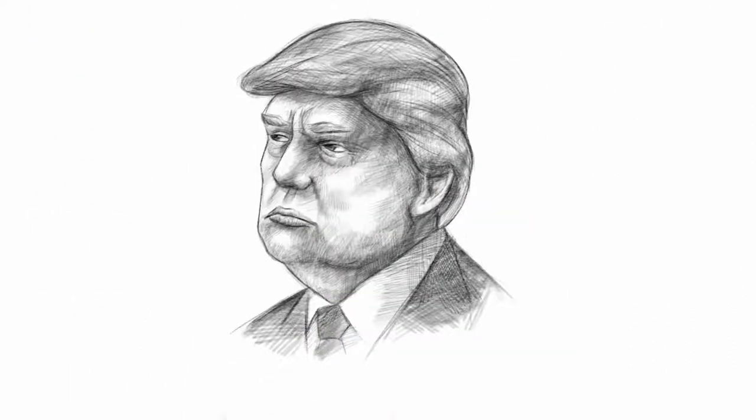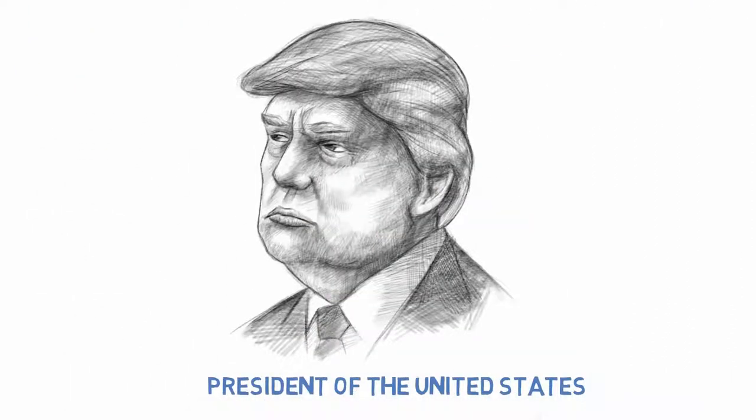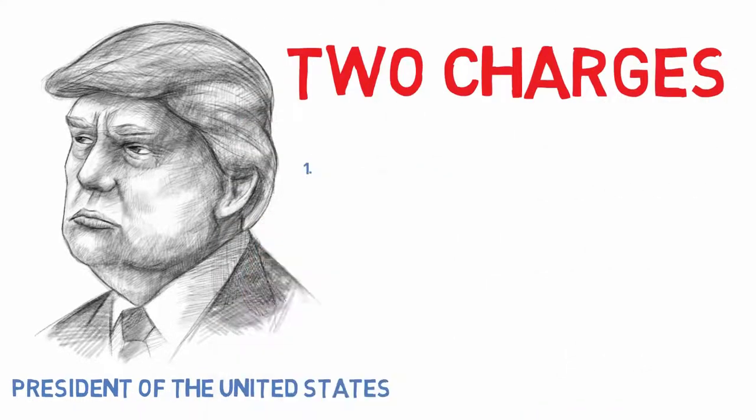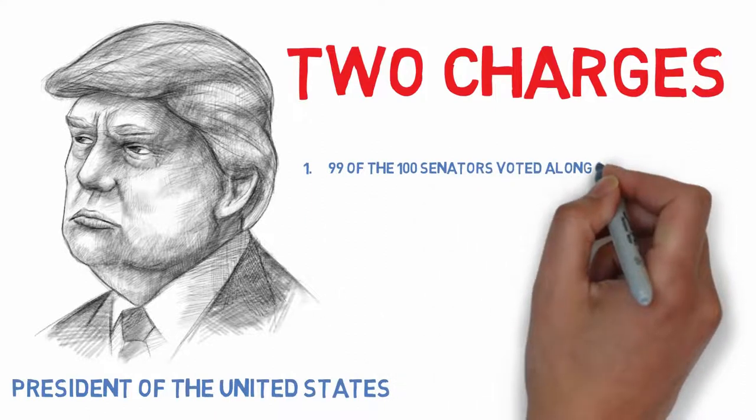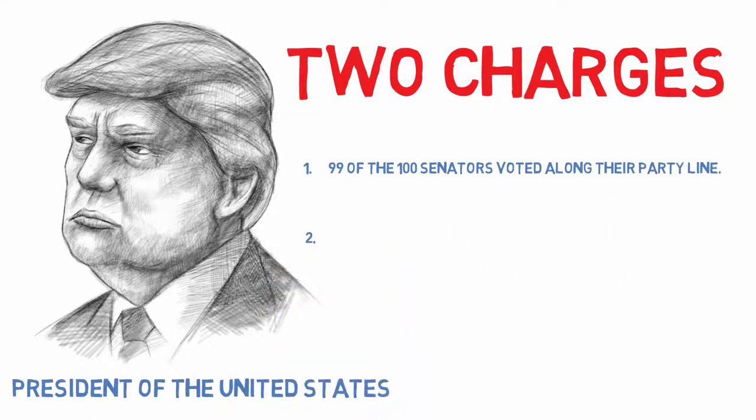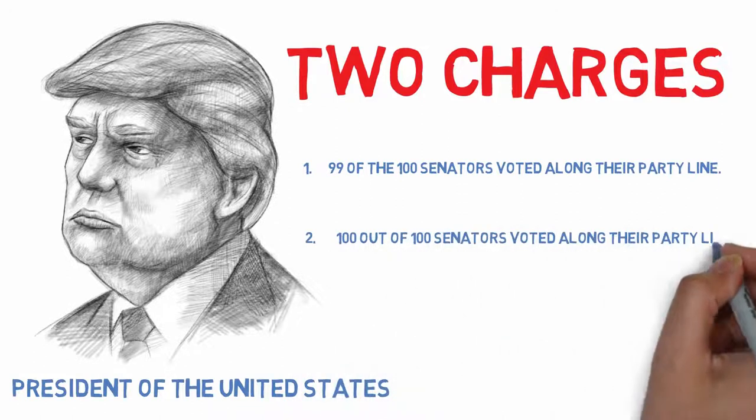When Donald Trump was impeached as President of the United States for the first time, two charges were brought against him. On the first charge, 99 of the 100 Senators voted along their party line. On the second charge, 100 out of 100 Senators voted along their party line.